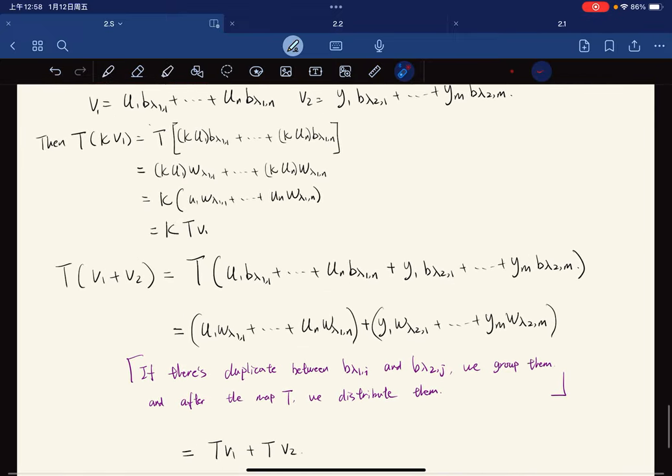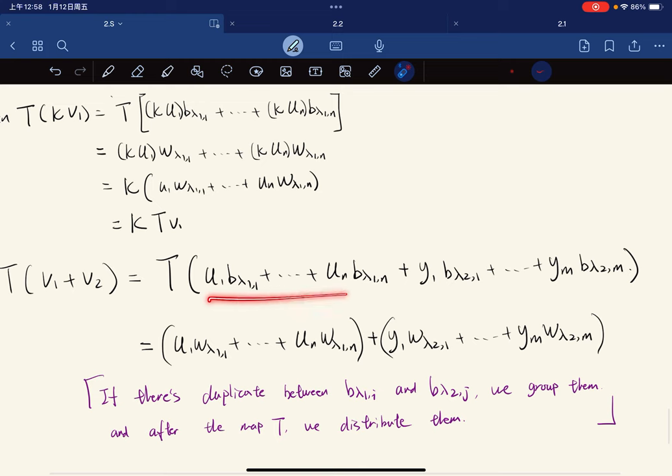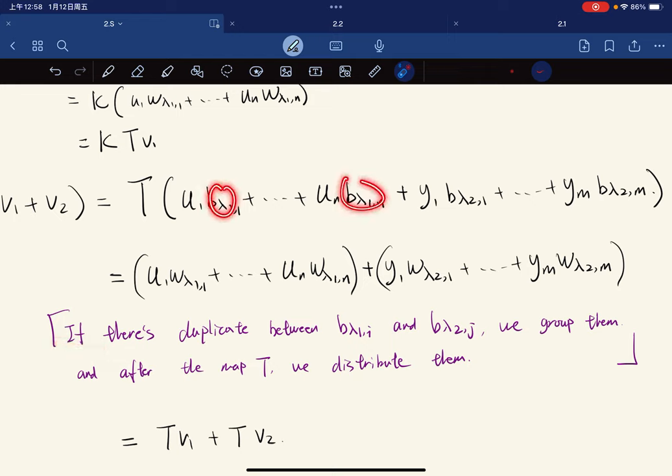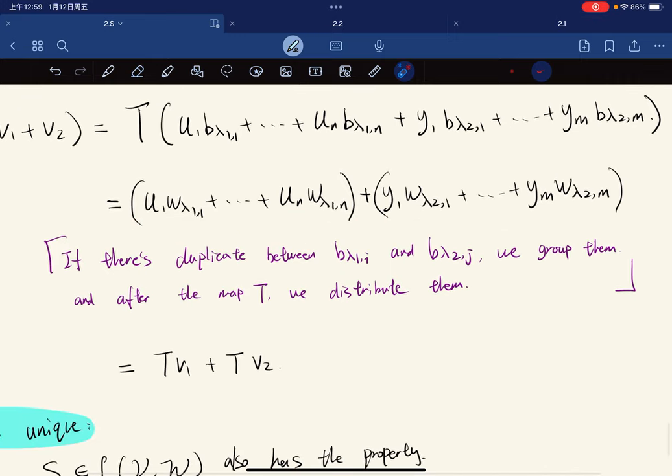Addition, we just add them and then we can group them. If there's duplicates between those elements, we group them. After the map T, we're mapped to W, and then we distribute it. So this operation is fine. Now this is equal to Tv1 plus Tv2.